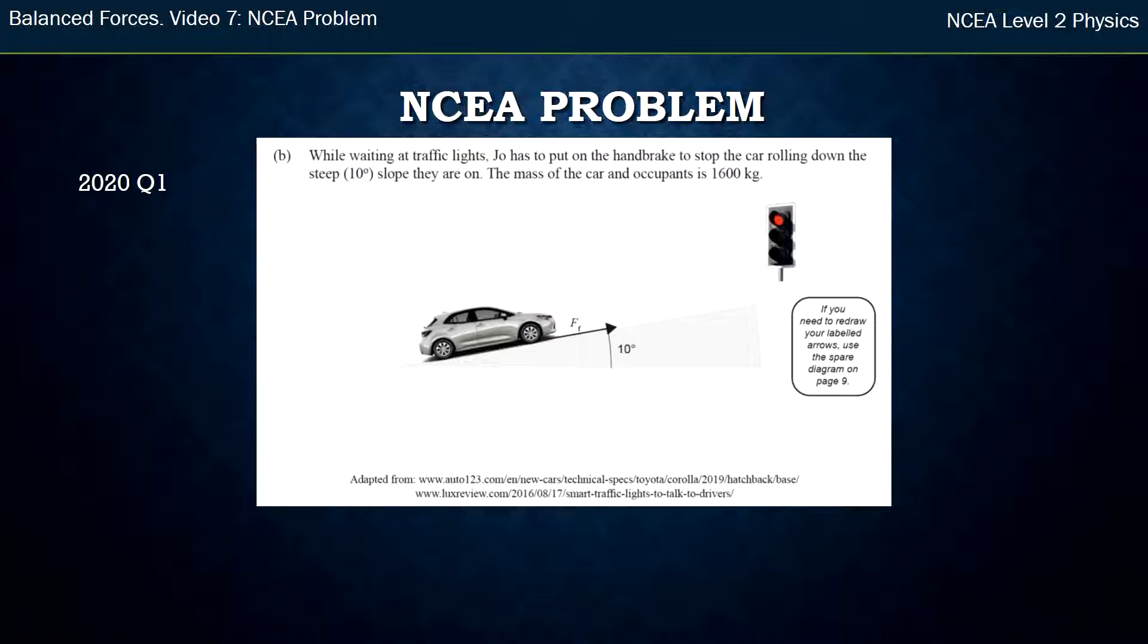So there's a car waiting on a slope, it's stationary. The mass of the car is 1,600 kg, and they give you that the friction force is up the slope there.